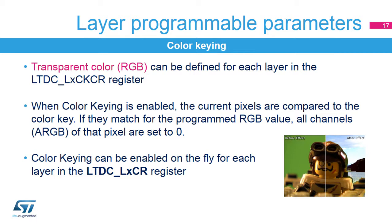A color key RGB can be configured to represent a transparent pixel. If color keying is enabled, the current pixels — after format conversion and before blending — are compared to the color key. If they match the programmed RGB value, all channels ARGB of that pixel are set to 0. The color key value can be configured and used at runtime to replace the pixel RGB value. Color keying is enabled through the LTDC_LxCKCR register.